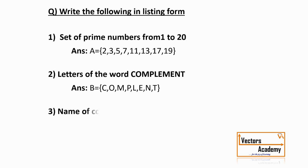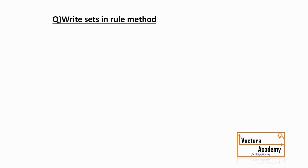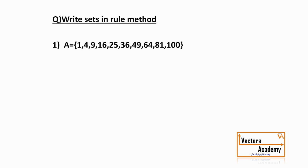Let's look at the next statement: name of the continents. We have to list a set with all the different continents. This is how we represent a set in a roster form or listing form. Now set B equals {6, 12, 18, 24, ... up to 48}, which is another example given in listing form to convert to set builder form.